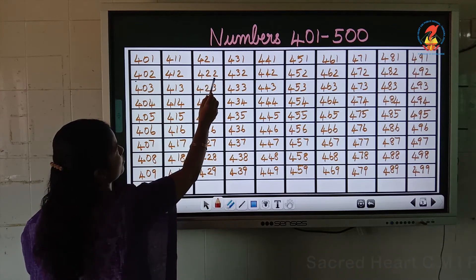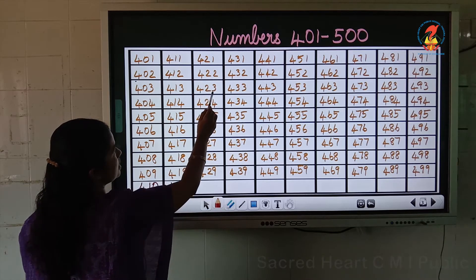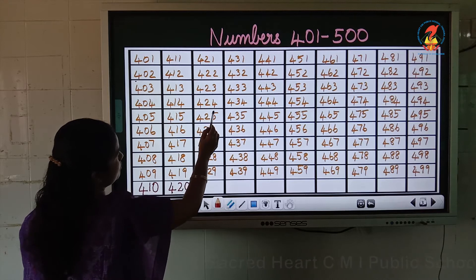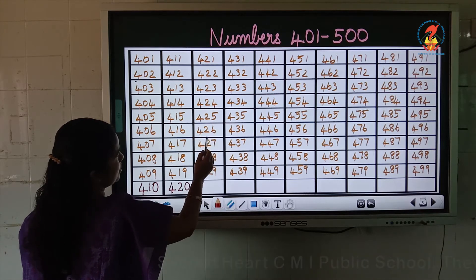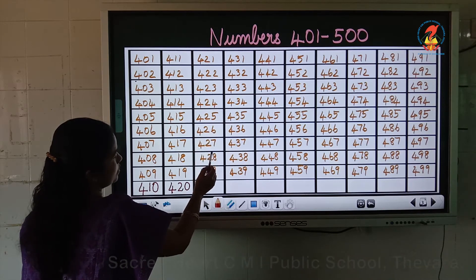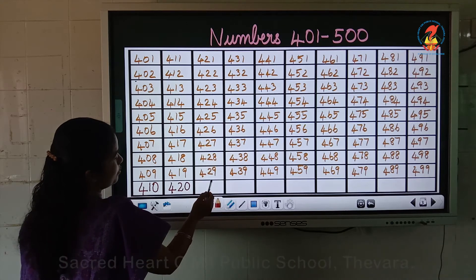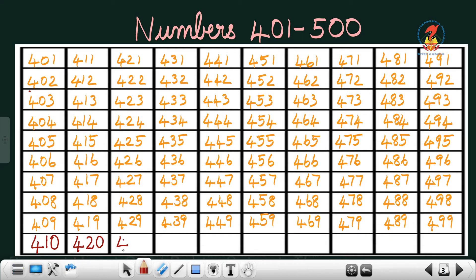After 420, 421, 422, 423, 424, 425, 426, 427, 428, 429, 430.